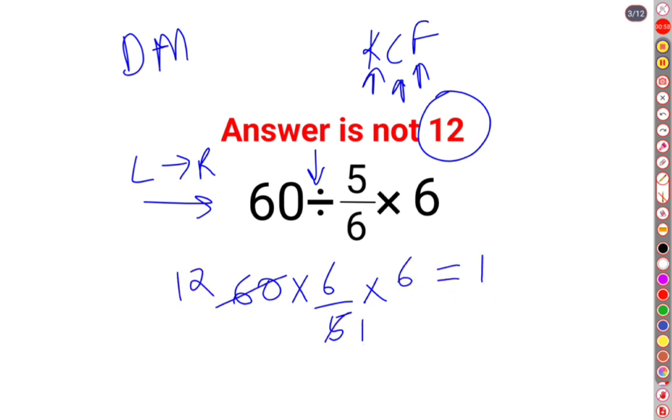So here, what you are getting is 12 multiplied by 6 multiplied by 6, which is 72 multiplied by 6. So the answer for this one is supposed to be 432.